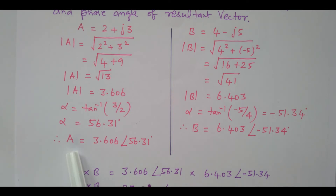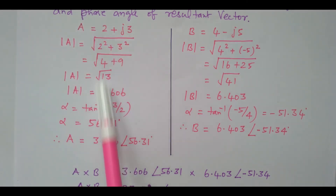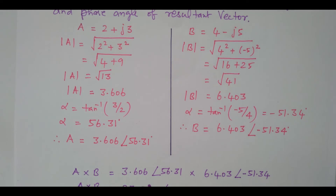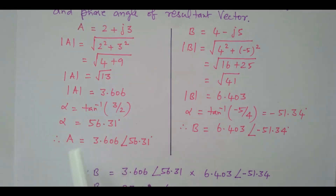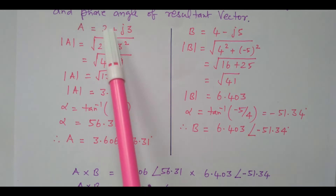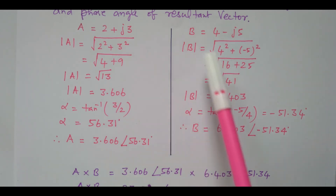Now it is represented as A equal to 3.606 with an angle of 56.31. This is the rectangular form now converted into polar form. This can be done on the calculator also. In the calculator, directly you can convert from rectangular form to polar form. This is a normal calculation method; in the calculator it is available directly.